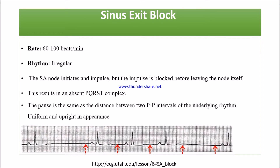Let's look at sinus exit block. When there is a sinus exit block, the heart rate is 60 to 100 beats per minute or may be affected. The rhythm from one R wave to the second is irregular. The SA node initiates the impulse but a block is present, so the node itself is affected. The PQRS complex is also affected, and the pause maintains the same distance between the PP intervals.